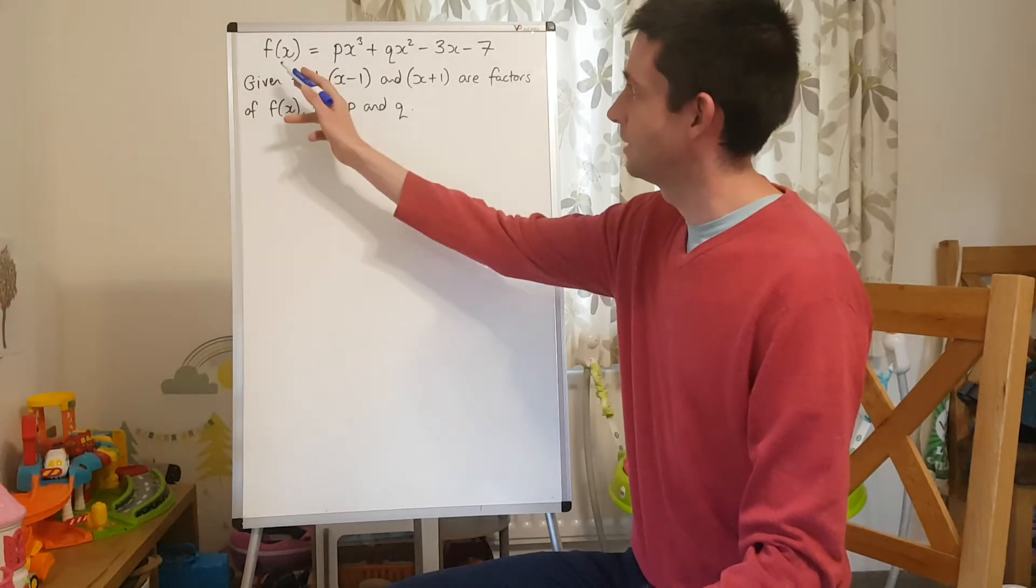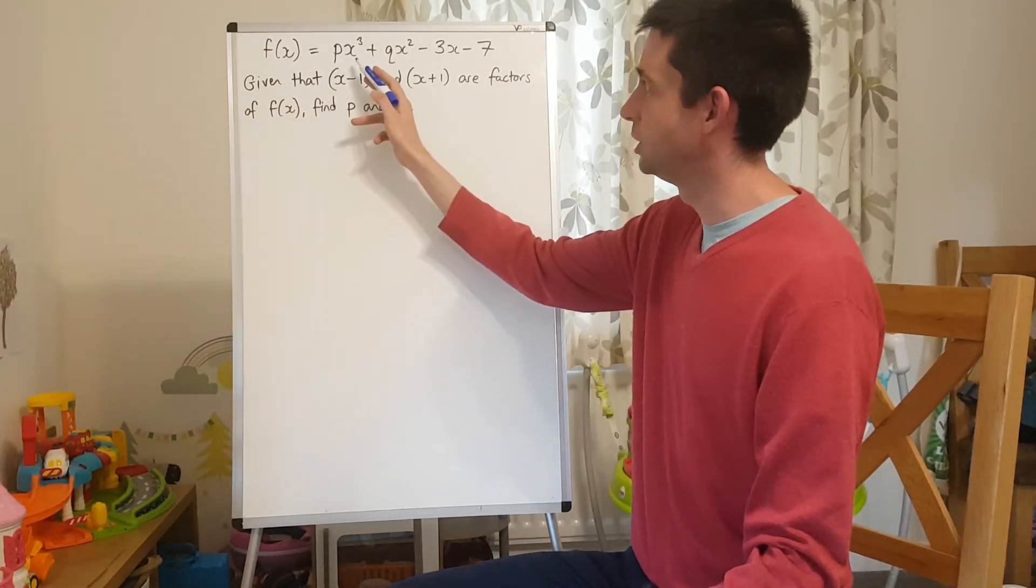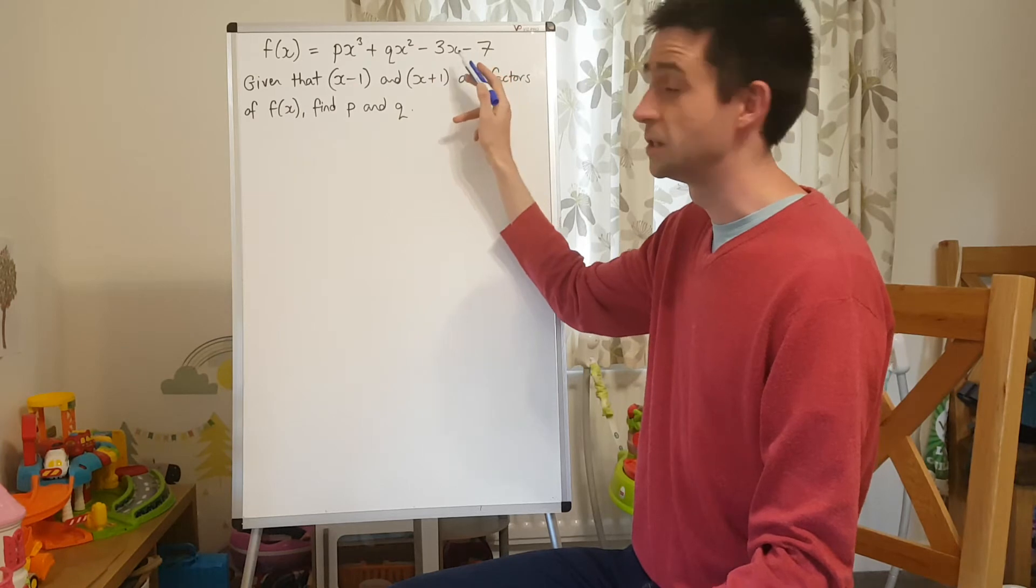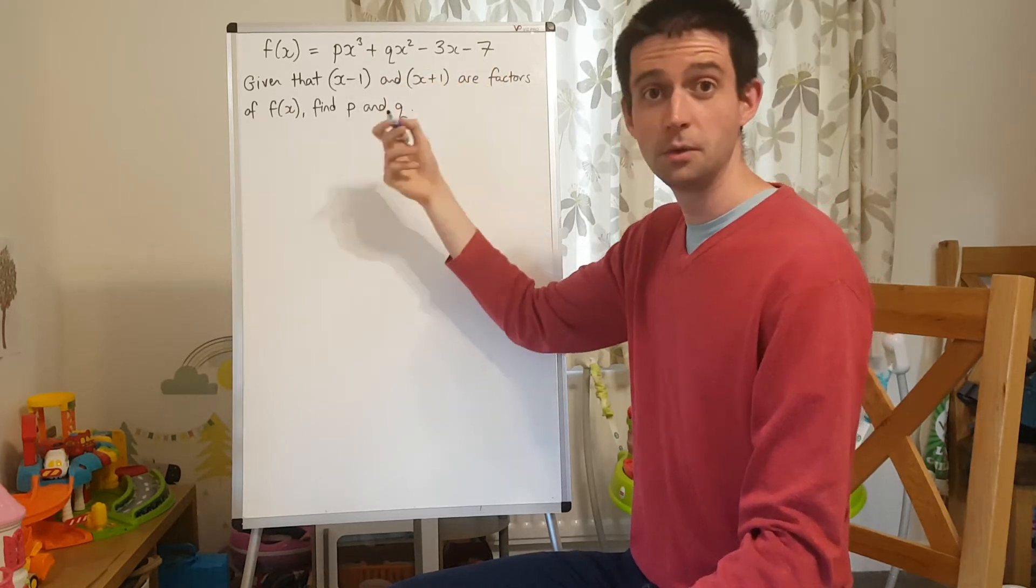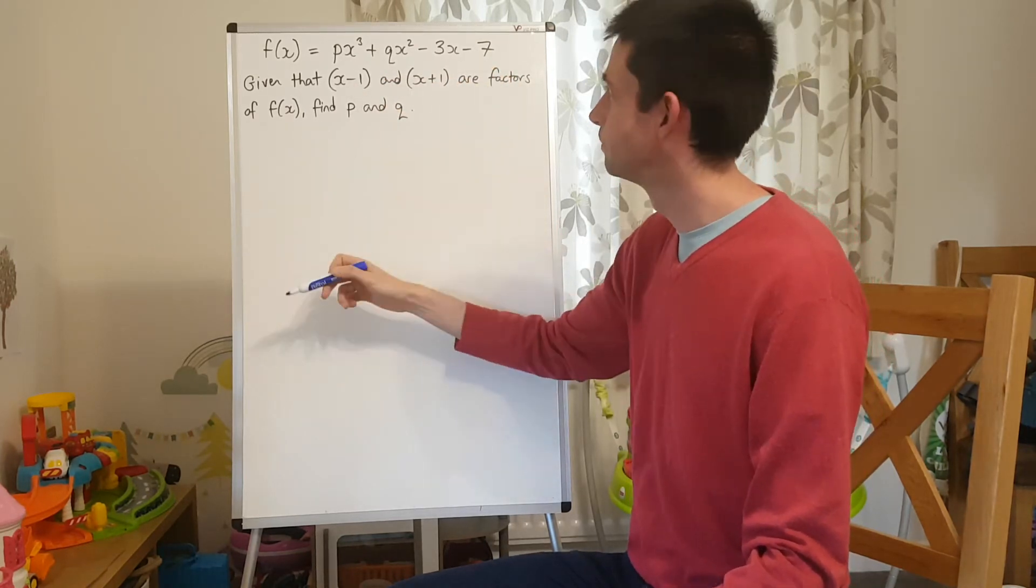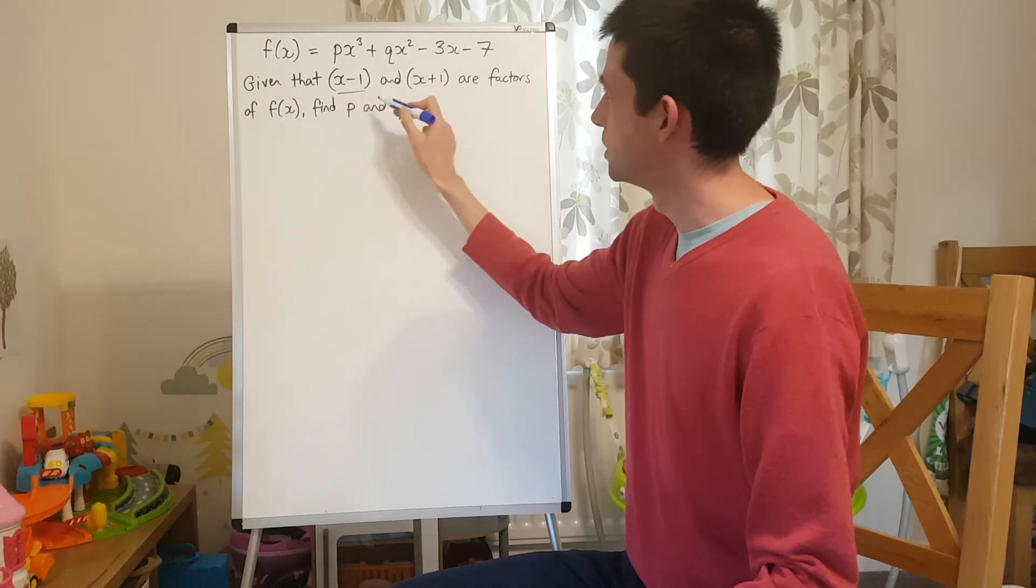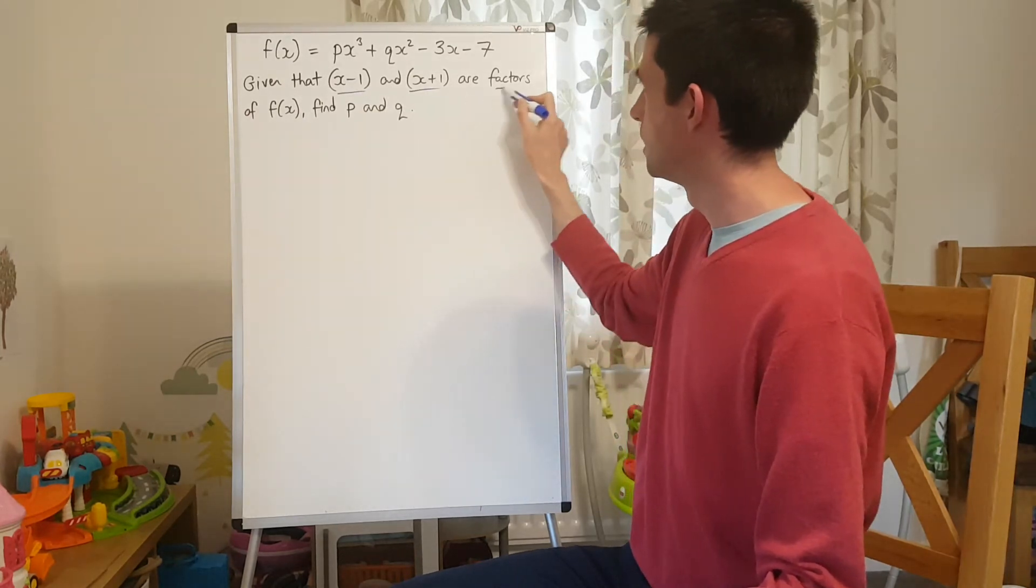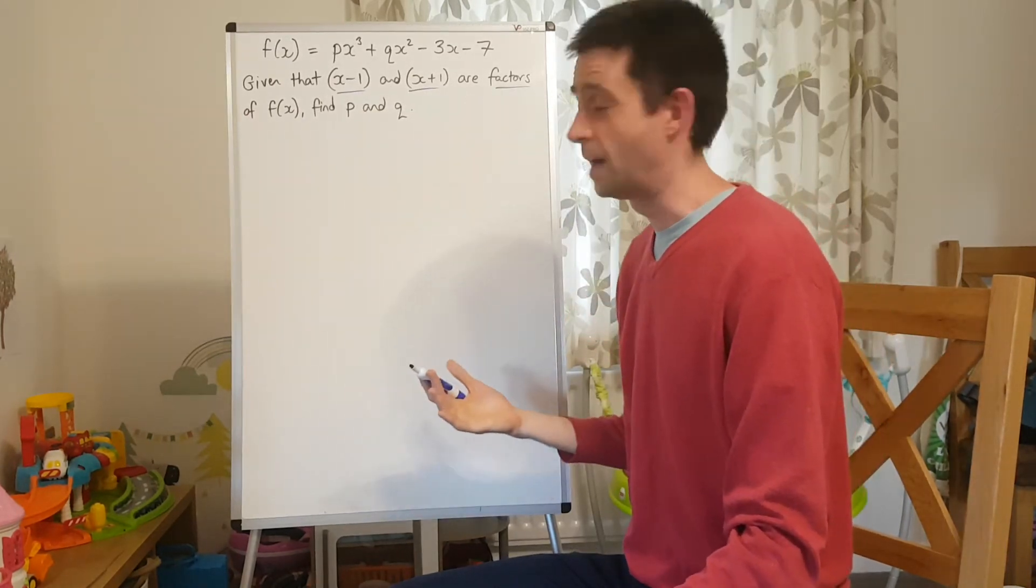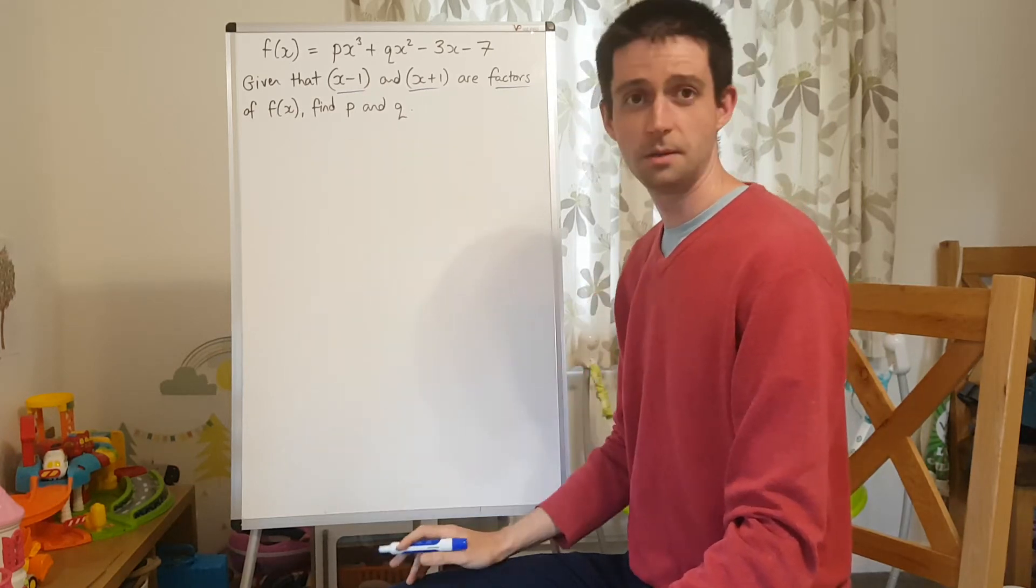The question we have here is f(x) = px³ + qx² - 3x - 7. p and q are both unknown numbers that we have to find. We're told that (x - 1) and (x + 1) are factors of f(x) and asked to find p and q.